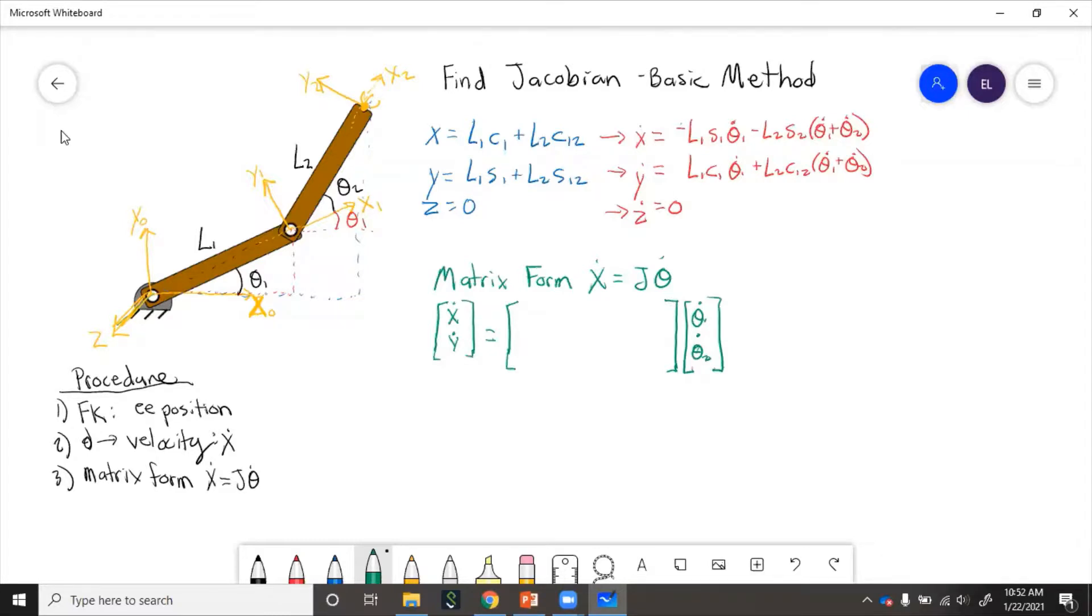So to get matrix form from the velocity equations, we just need to put in the coefficients of those equations. Because if we recall, j equals del x del theta one, del x del theta two, del y del theta one. Actually, these aren't dots. And then del y del theta two.